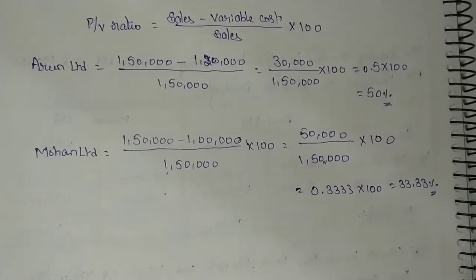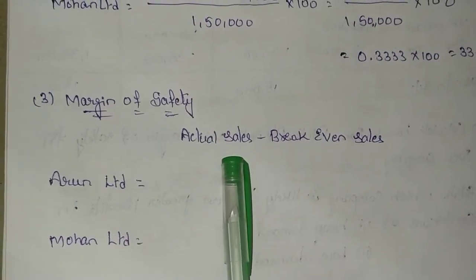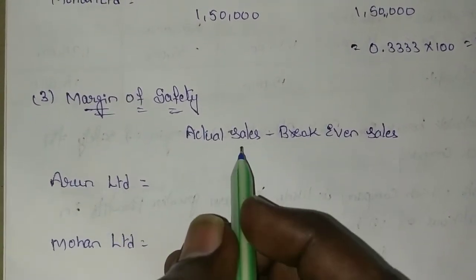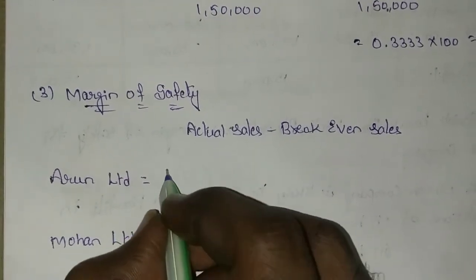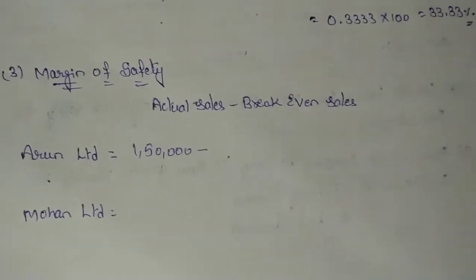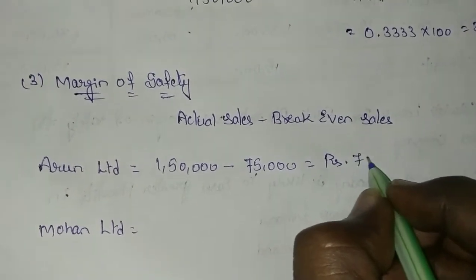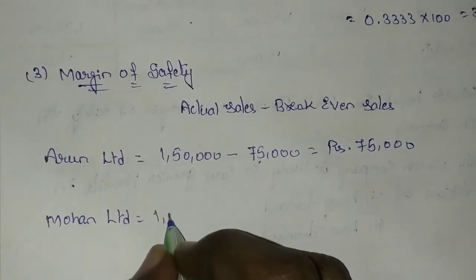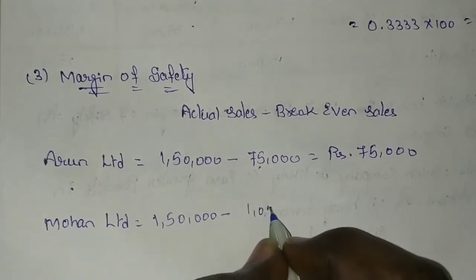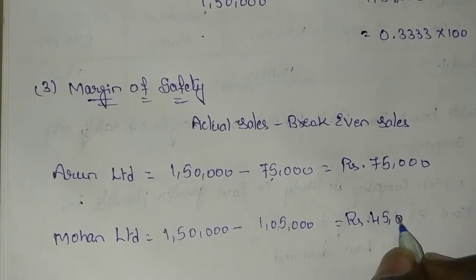Next, we calculate the margin of safety. The formula for margin of safety is actual sales minus breakeven sales. Actual sales means the sales given in the problem. For Arun Limited: 1,50,000 minus breakeven sales of 75,000 equals a margin of safety of Rs. 75,000. For Mohan Limited: actual sales 1,50,000 minus breakeven sales 1,05,000 gives a margin of safety of Rs. 45,000.